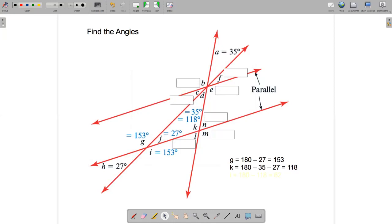What else? N must be supplementary to K. So that must be 180 minus 118. Actually, L is also supplementary to K. So 180 minus 118. So 62 degrees. There we go. 62. N is opposite. So also 62 degrees. M is opposite K. So 118 degrees.